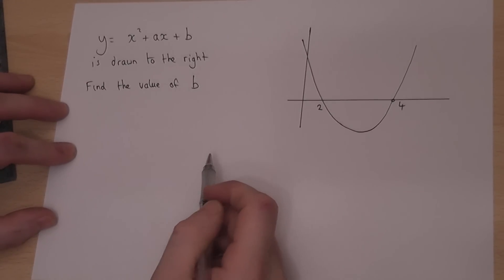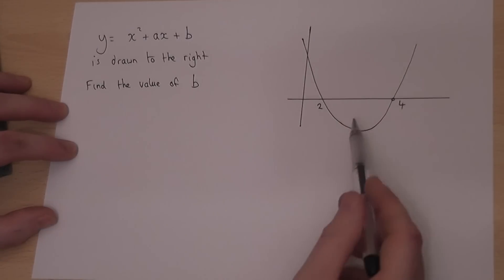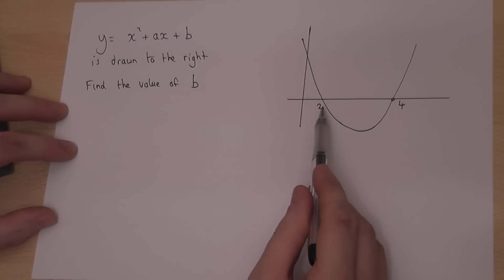This is a remarkably easy A-star question if you know the trick. Now we're given an x-squared graph and we know the two solutions are 2 and 4.